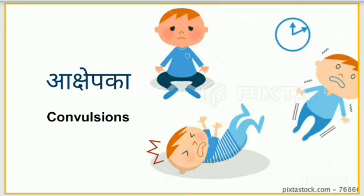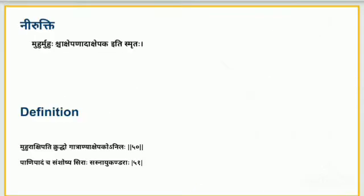Aakshapaka, meaning convergence, is not a Vyadi (disease) itself but is associated as a symptom in many diseases such as Apasmara, Yoosh Apasmara, Mastishka Arpuda, Shiro Abhigata, Mastishka Avarana Shota, Mootra Vishayamayata, Dhanus Tamba, and Udara Krimi in children. It is associated with repeated or episodic attacks of convulsions. The term Aakshapaka refers to that which is associated with episodic or repeated attacks of convulsions.